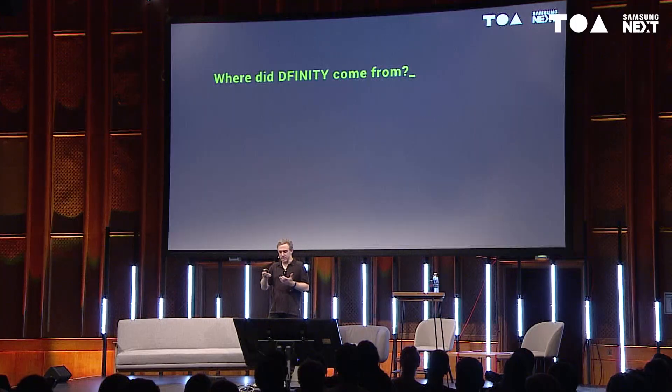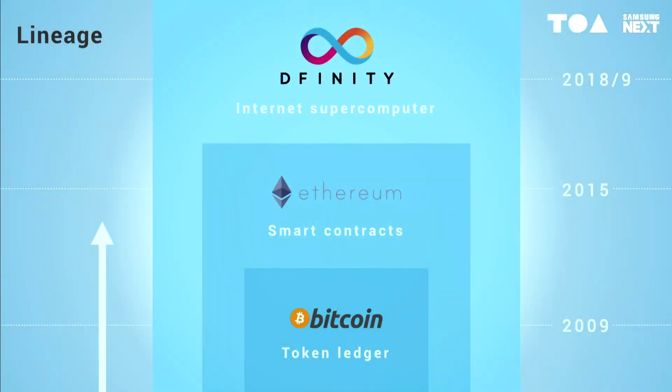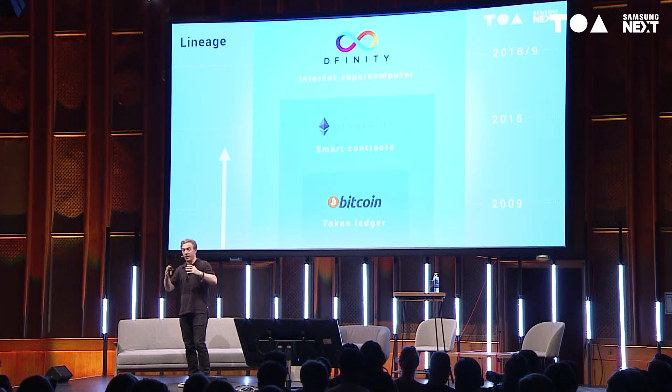Where did DFINITY come from? We do have to trace our history through Bitcoin and Ethereum. I wouldn't define DFINITY as a blockchain project, although you get all the properties of a blockchain — it's a decentralized computing network. What was remarkable about Bitcoin wasn't that it was a decentralized network — we already had decentralized networks like BitTorrent for file sharing. What made Bitcoin different was that, although it was a decentralized network, everybody could share a consistent view of a state — in this case a ledger. With BitTorrent, your interactions were limited to whoever you were downloading a file from. The difference with Bitcoin was there was a shared state, a shared ledger.